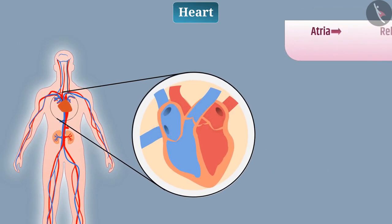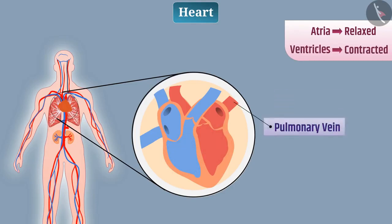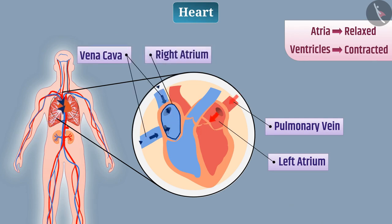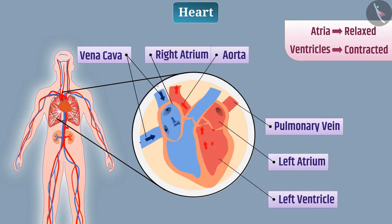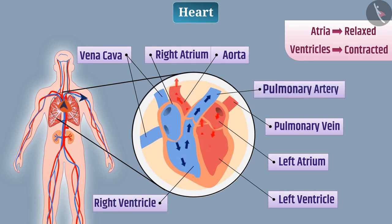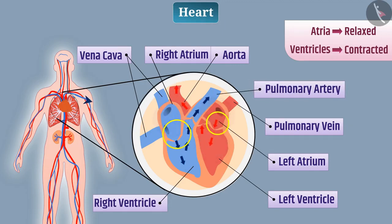When both atria are relaxed and both ventricles are contracted, the pulmonary vein brings oxygenated blood from the lungs into the left atrium, and the vena cava brings deoxygenated blood from the body into the right atrium. The aorta carries oxygenated blood from the left ventricle to various parts of the body, while the pulmonary artery carries deoxygenated blood from the right ventricle to the lungs for oxygenation. A valve between the atrium and ventricle prevents backflow of blood.